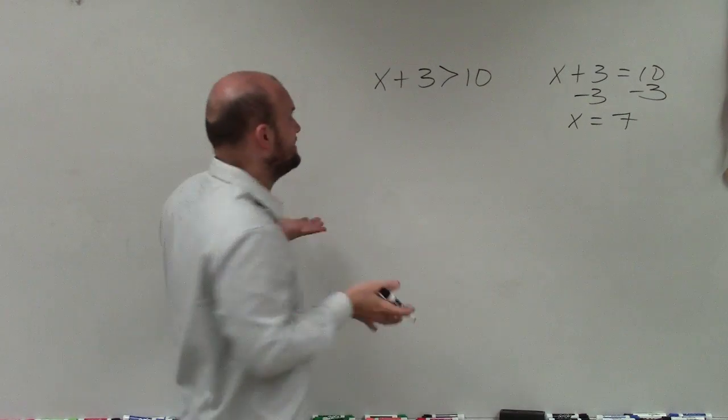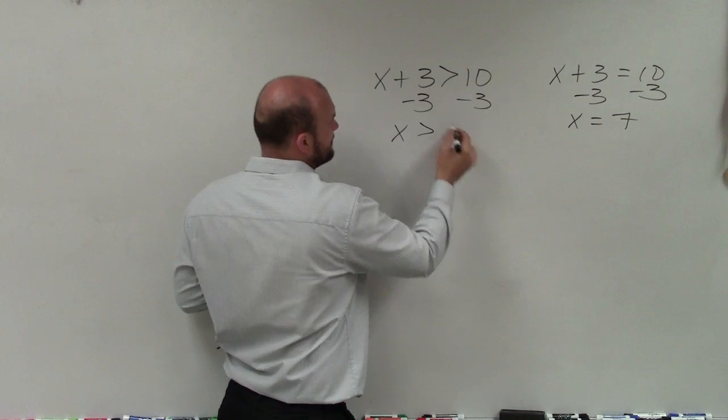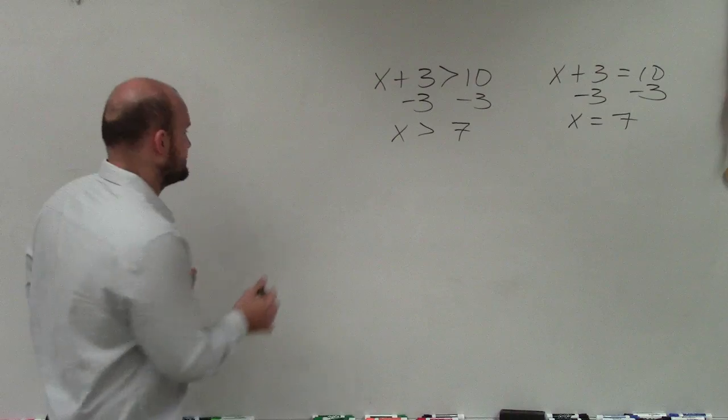Well, for an inequality, it's going to be the exact same thing. We use our inverse operations and our properties of equality on both sides. So now I have the inequality x is greater than 7.